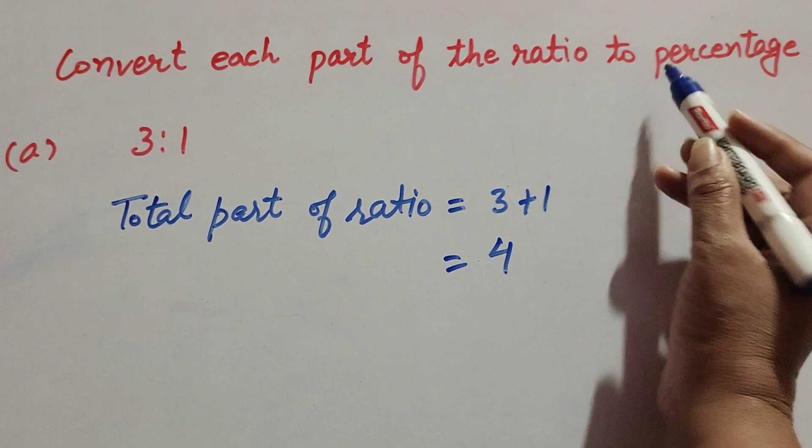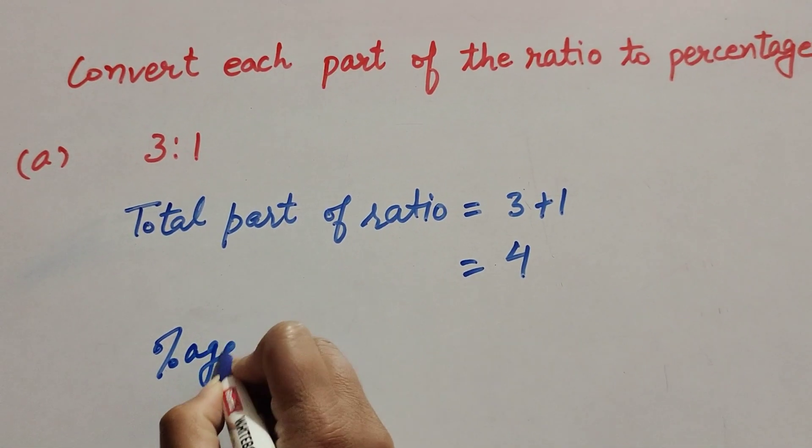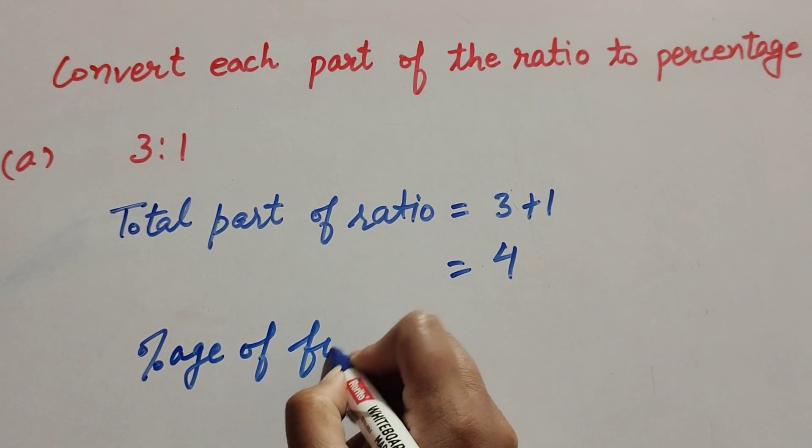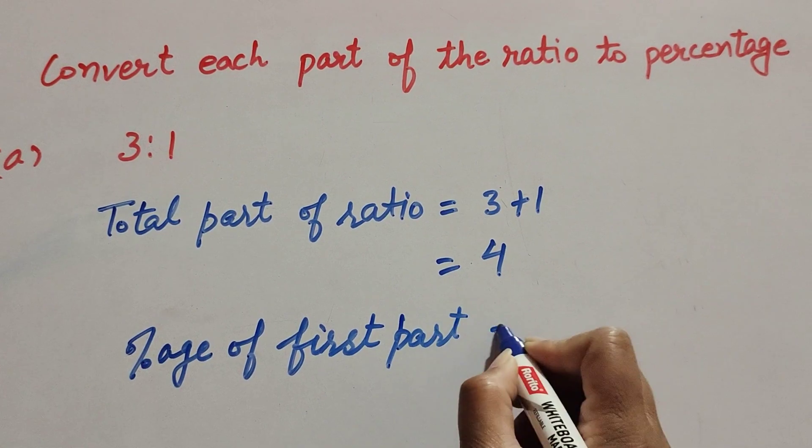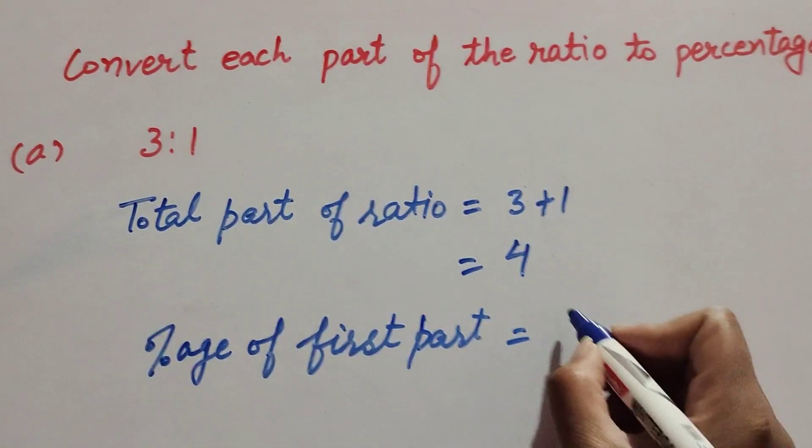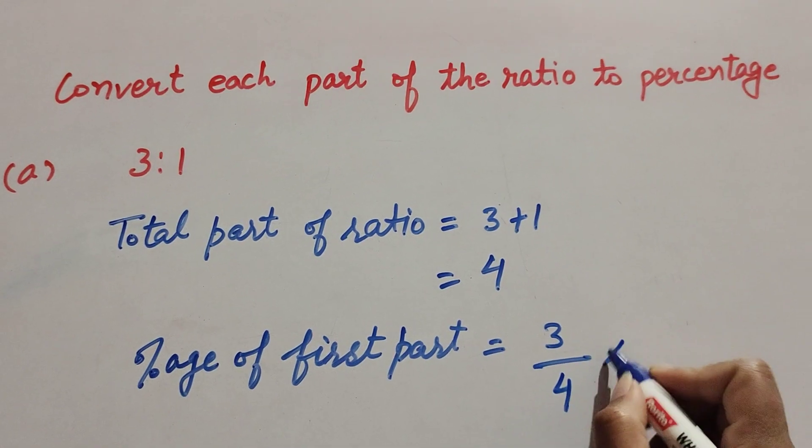Now we change each part of ratio to percentage. So percentage of first part, it is equal to 3 over total part, it is 4, multiply by 100.